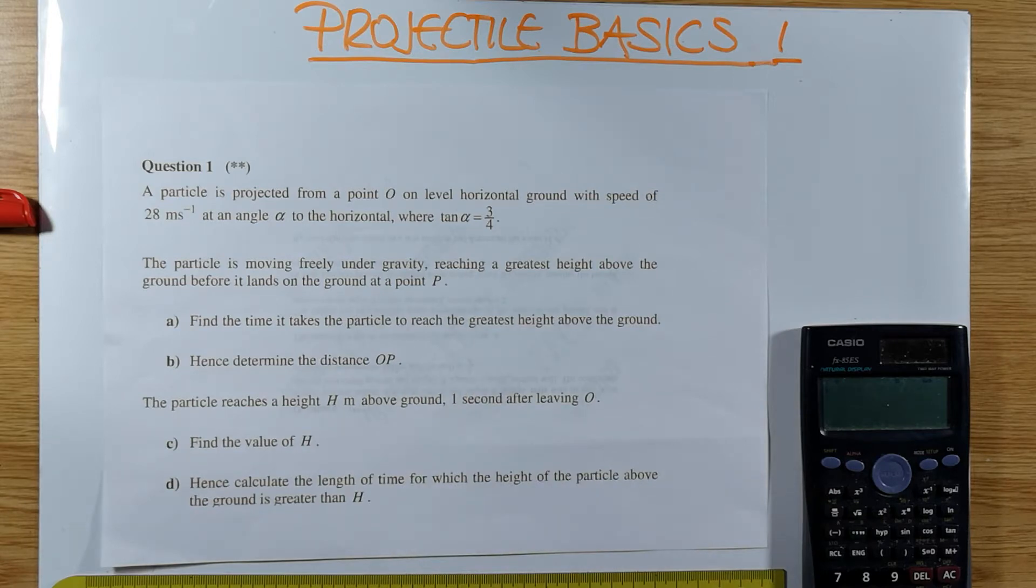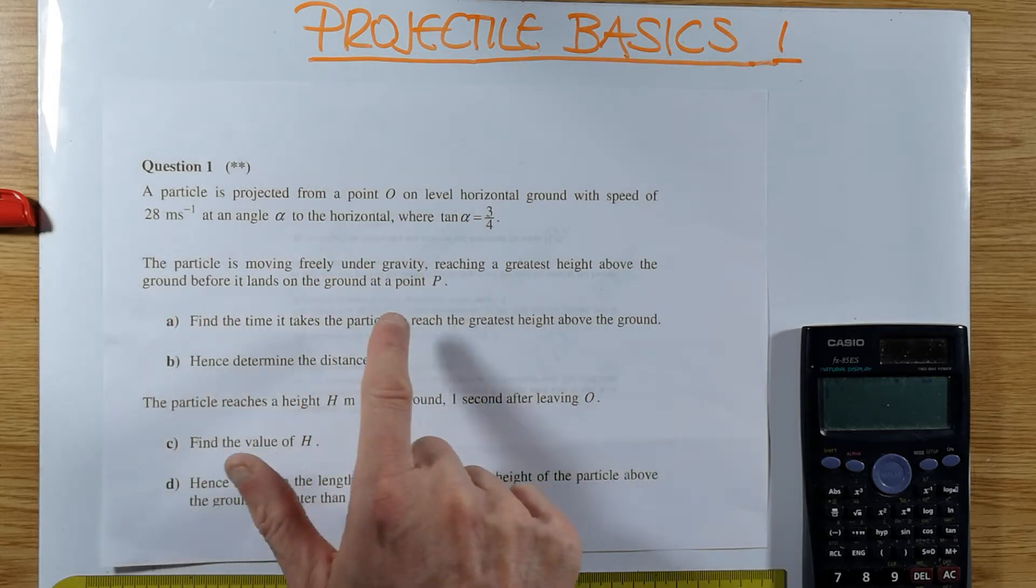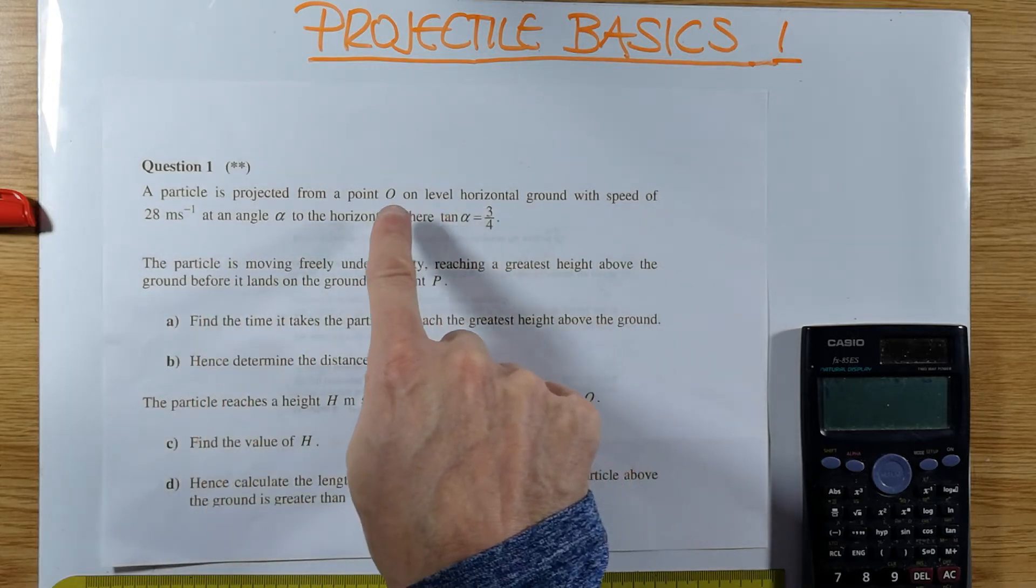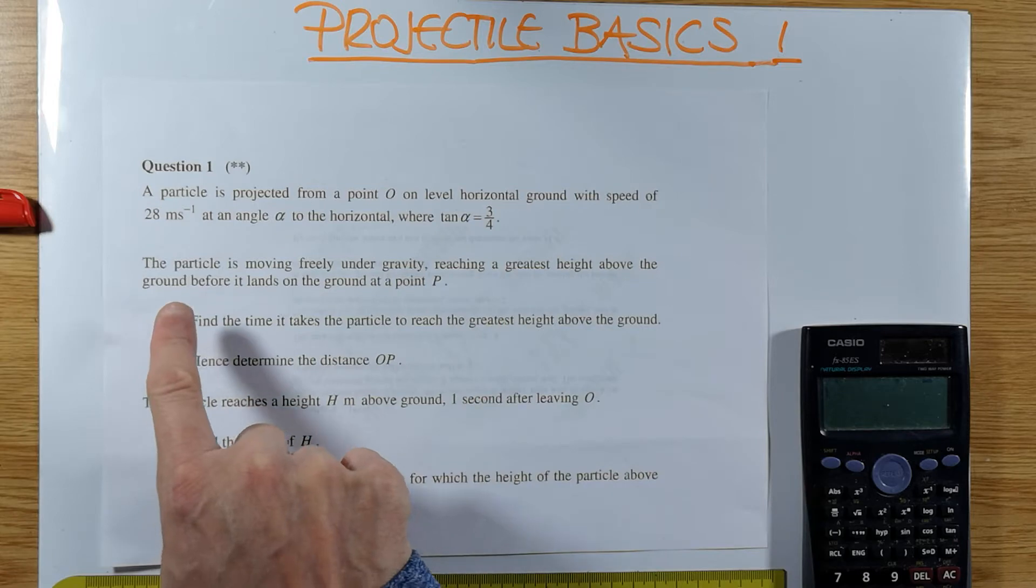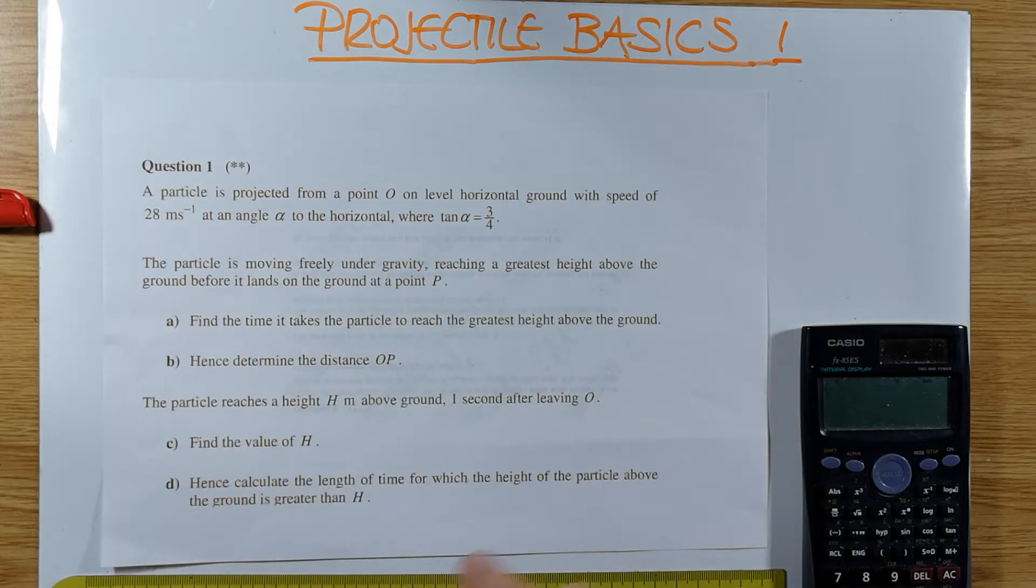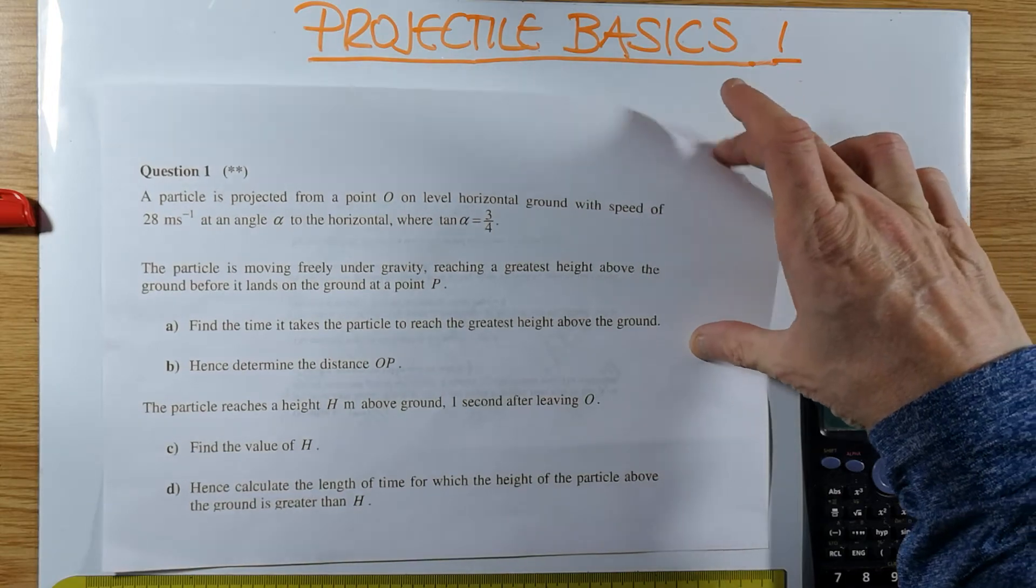The next thing when it comes to projectile questions is identifying whether it's a projection ground to ground, for example a golf ball being struck and landing back into the ground, or is it from a height, let's say the end of a cliff. So you just scan the question - from a point on horizontal ground and reaching a greatest height before it lands on the ground again. So it's a ground-to-ground projection.